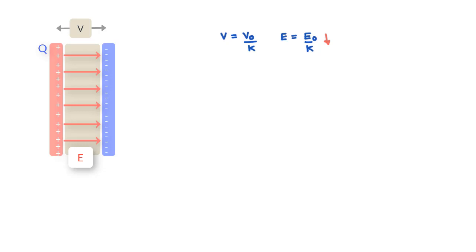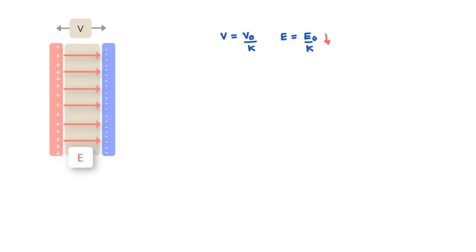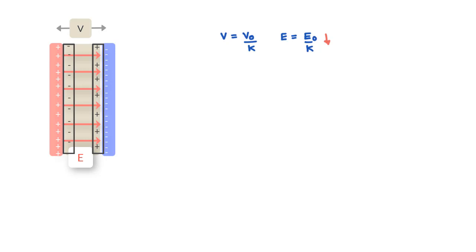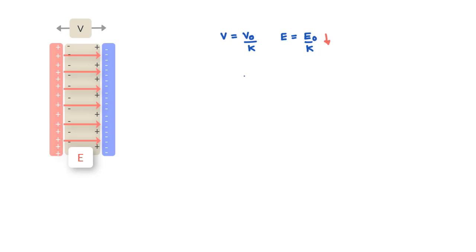Since the electric field has become lower, one might conclude that the surface charge density on the plates has reduced — but that does not happen. The surface charge density of the plate remains unchanged. What does happen is that an induced charge appears on the surface of the dielectric slab that is opposite in sign to that of the plates. The dielectric was neutral before and continues to be neutral overall. The induced charge appears only due to redistribution of positive and negative charges within the dielectric material — this redistribution is called polarization — and this polarization creates its own electric field that is opposite to the capacitor's electric field, thereby reducing the net field by a factor of K.